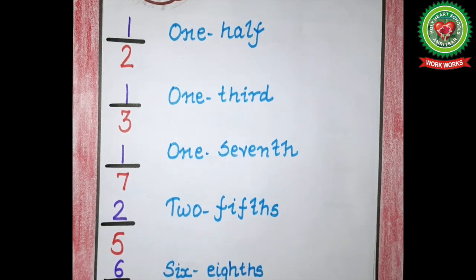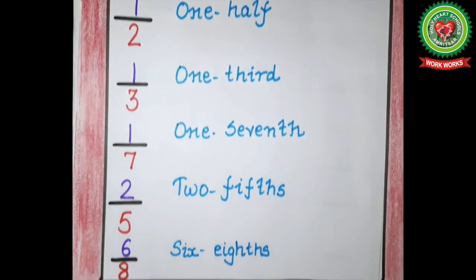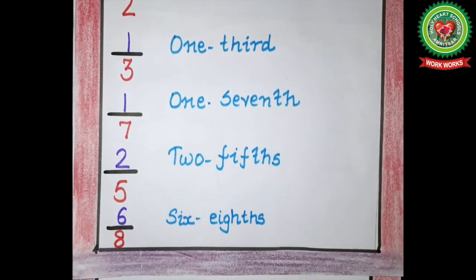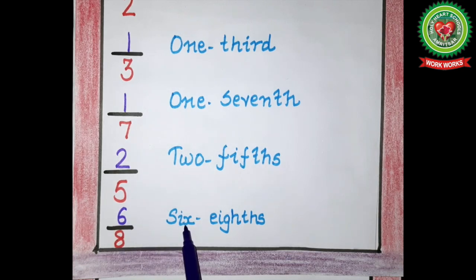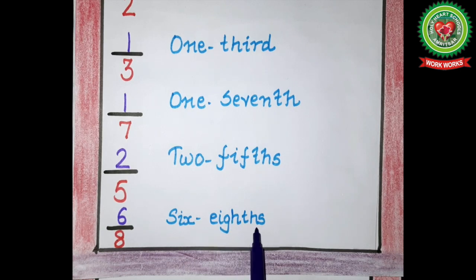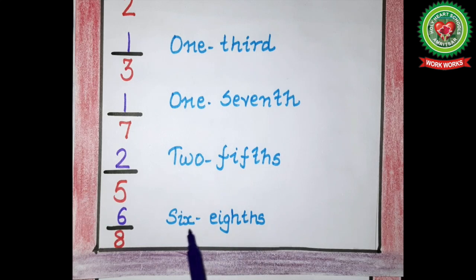Next example: six upon eight. The numerator remains the same — six — and for writing eight we write 'eighths': six eighths.